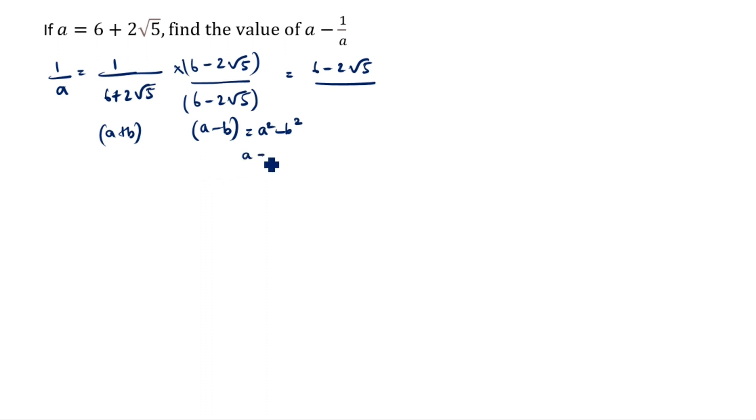What is a? a is equal to 6 in this number. b is equal to 2 root 5. So a value 6 square minus b is 2 root 5 square.